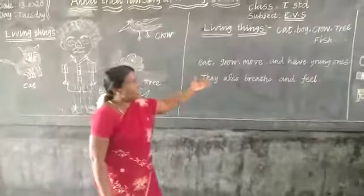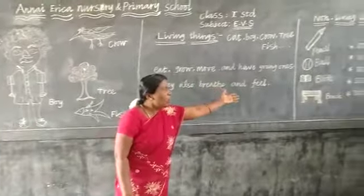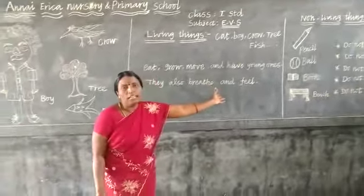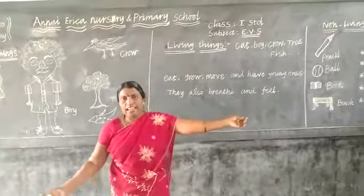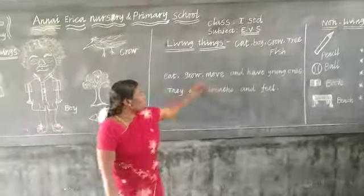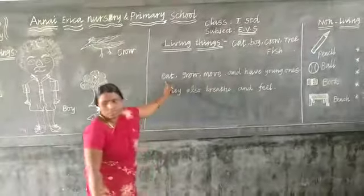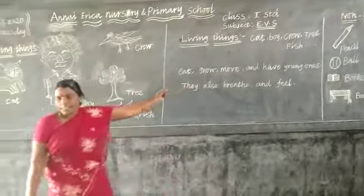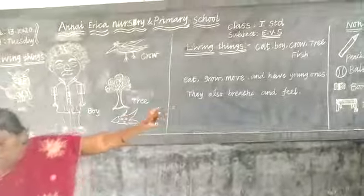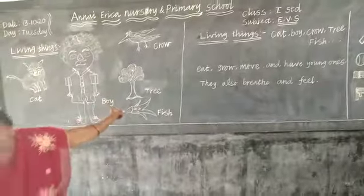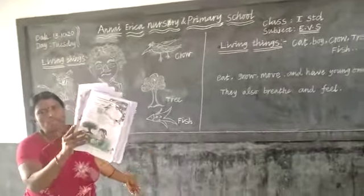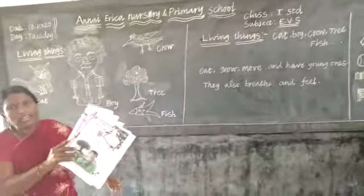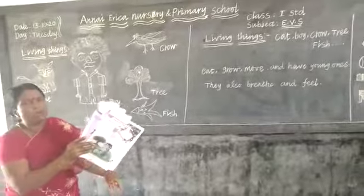Pencil, ball, bouquet, table, chair, blackboard — these are non-living things. We are going to follow them.